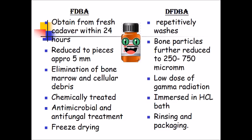Freeze-dried bone allograft: obtained from a fresh cadaver within 24 hours, bone reduced to approximately 5 mm pieces, bone marrow and cellular debris eliminated, chemically treated, and treated with antimicrobial and antifungal agents, then freeze-dried. For decalcified freeze-dried bone allograft (DFDBA): repeated washes are given to graft from the cadaver, bone particle size is further reduced to 250–750 micrometers, a dose of gamma radiation is given to reduce antigenicity, then it is immersed in HCl (acid bath) to remove all calcium, then rinsed and packaged.